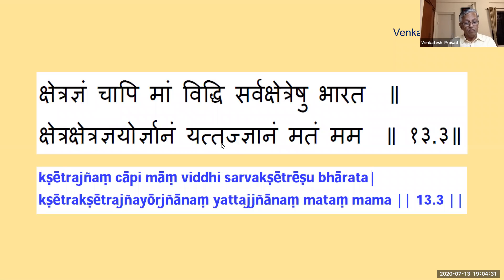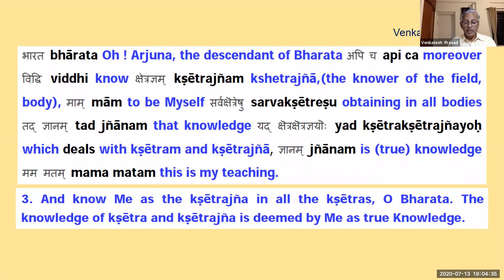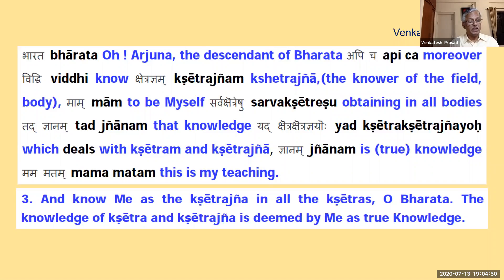Kshetrajnam Mahamvidhi — here Kshetrajna is Jivatma. Who is telling Mahamvidhi? It is Krishna; he is Paramatma. Jivatma Paramatma Venavidhi — Krishna is different as a body but same as Kshetrajna. Here, Krishna the Paramatma — that ocean — is telling that water Kshetrajna in the wave Kshetra is ocean Paramatma itself. This is Jivatma Paramatma Aikyam.